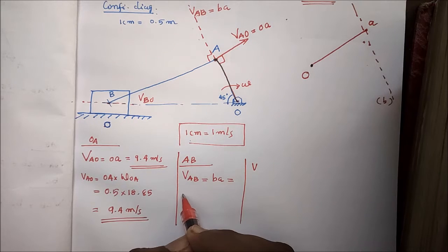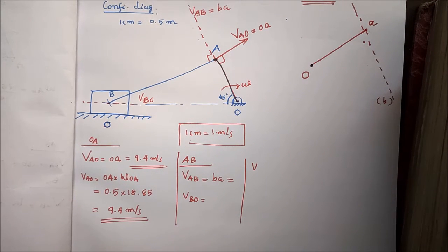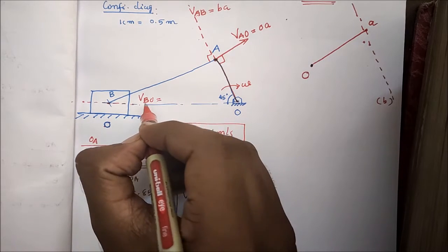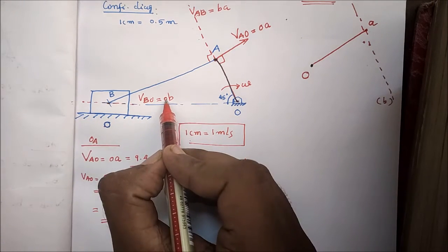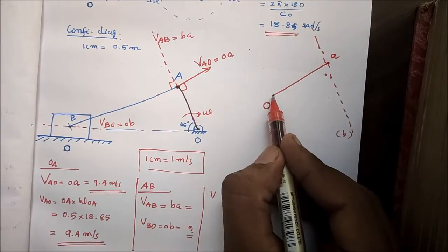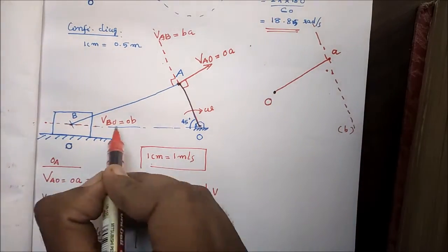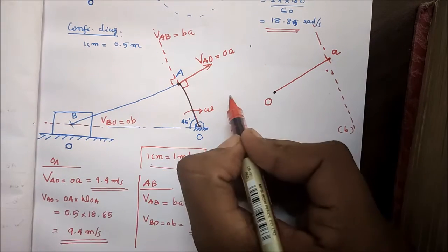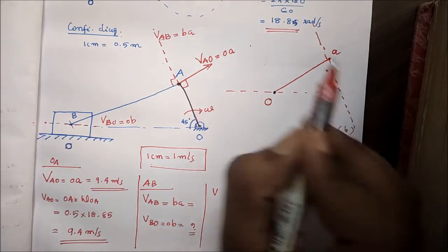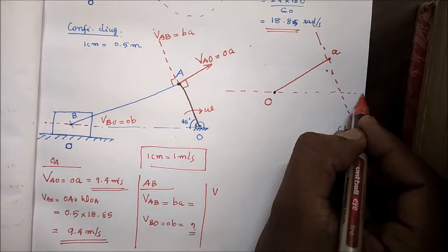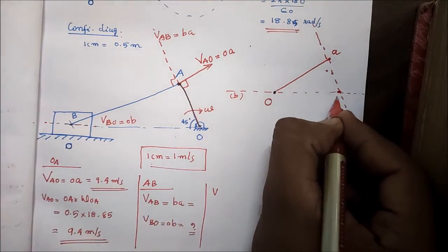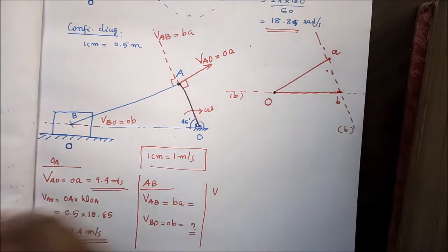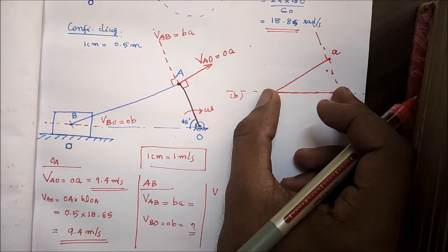What is the value of the velocity of point B? The velocity of point B with respect to O — which is equal to the vector V-B-O — there is a value for O and B. We have O and B on the diagram, and the distance O to B gives the velocity.